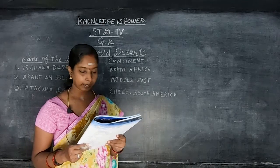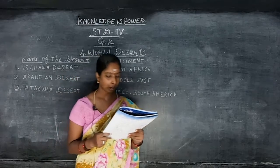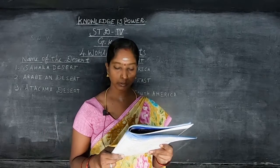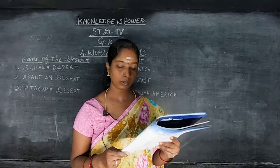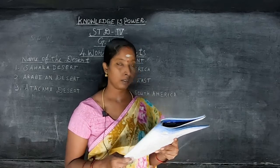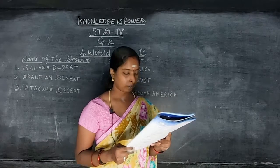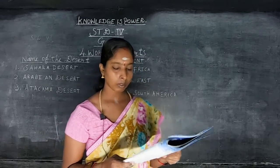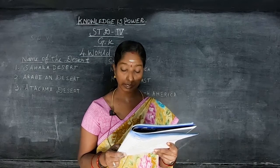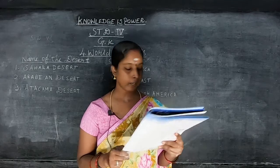Number four: Great Victoria Desert. Continent: Australia. Number five: Kalahari Desert. Continent: South Africa. Area: 5,082,727 square kilometers. Number six: Thar Desert. Continent: India. Area: 4,053,230 square kilometers.